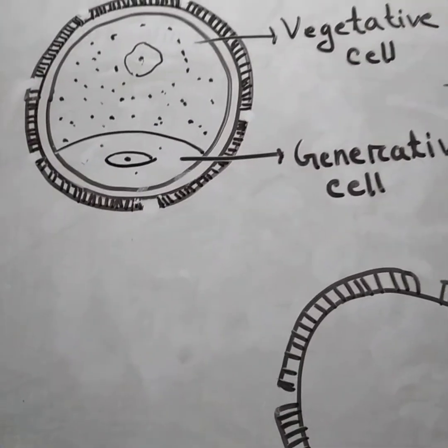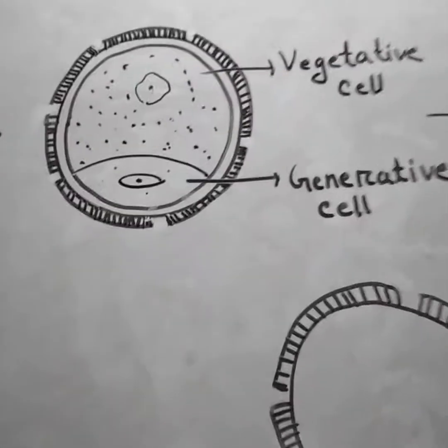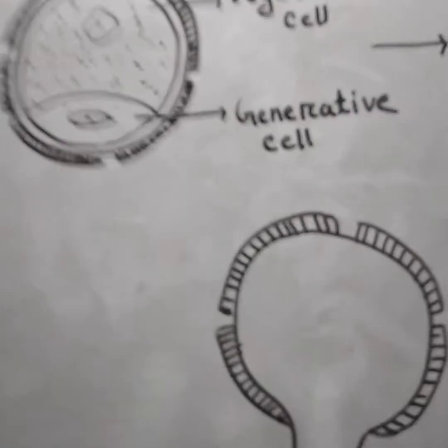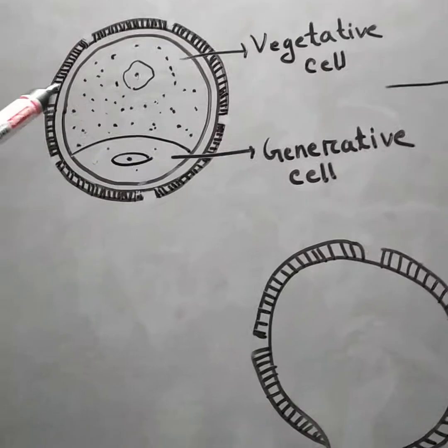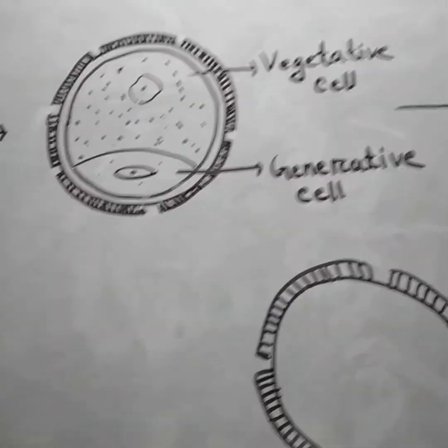In over 60% of angiosperms, pollen grains are shed at this two-cell stage.